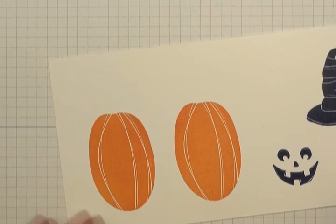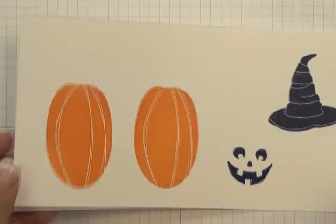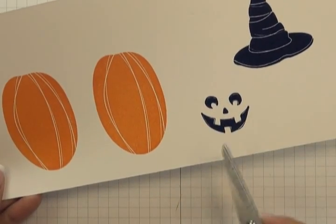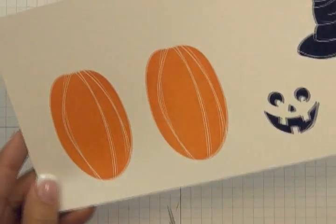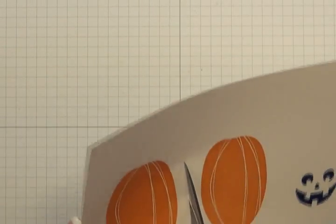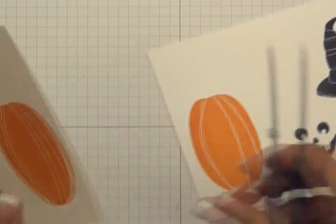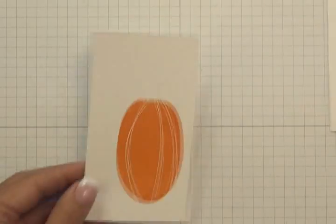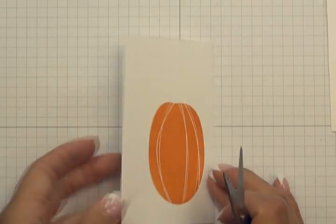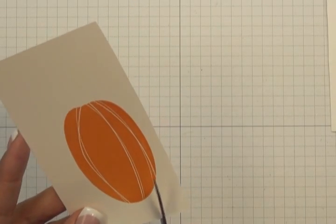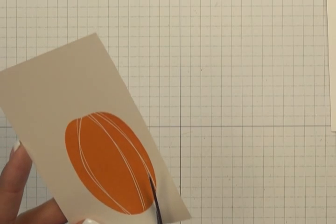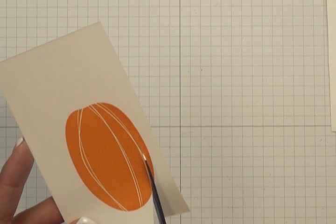One of the Jack O'Lanterns and the hat and the face, I'm going to be cutting out the entire image. But for the other one, I'm going to be cutting out segments. So I'm going to cut out this segment here.